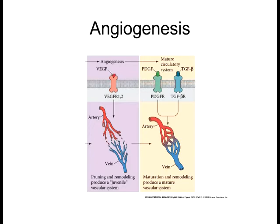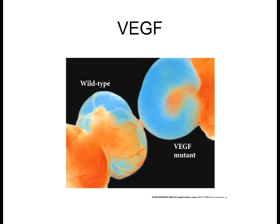They've shown that if you block VEGF, you don't get formation of blood vessels. Here are two pictures of two mice — this is the yolk sac. The wild type, where VEGF is working properly, shows blood vessels forming. In the VEGF mutant where it's not being secreted, you get no blood vessels at all. This shows that VEGF plays a key role in both vasculogenesis and angiogenesis.